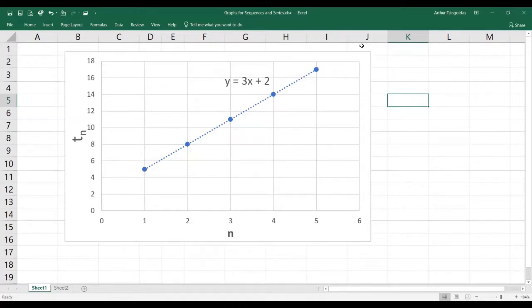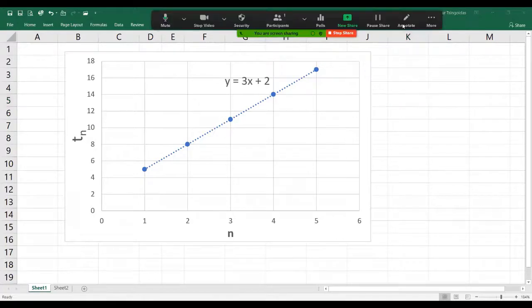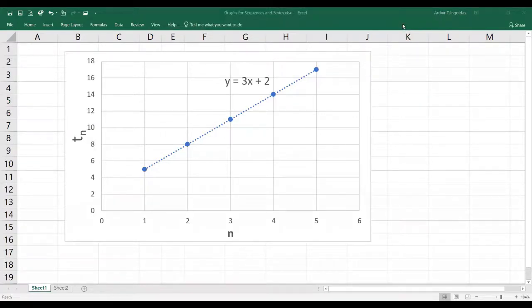Let's have a look at some of the points on that graph. So when n equals 1, the first term is 5. When n equals 2, the second term, well that's obviously 8.